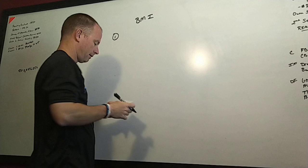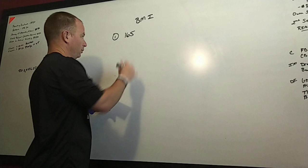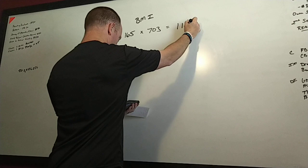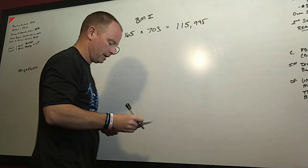It's going to ask you to multiply that by 703. I know that's a weird number but that's just the formula. So 165 times 703 is going to be 115,995. Remember that number, we'll come back to it.